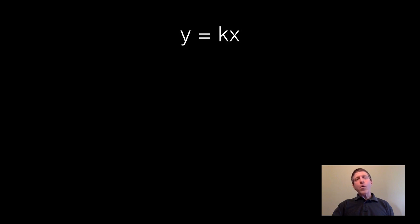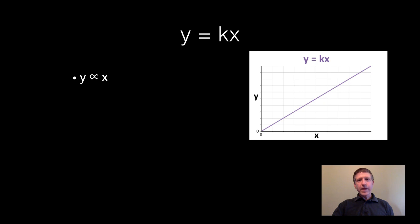So first we have y equals k times x. Our variable y, which is typically the dependent variable, equals some constant k times our independent variable x. So another way of writing this is simply y is proportional to x. If you double x, that means y will double. Here's a graph of y equals kx. You can see it's a straight line and it goes through the origin zero zero.